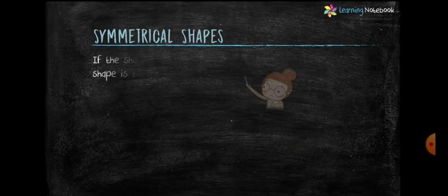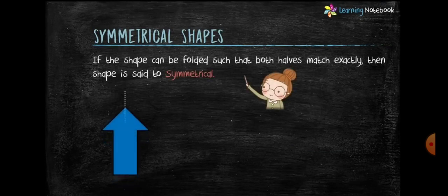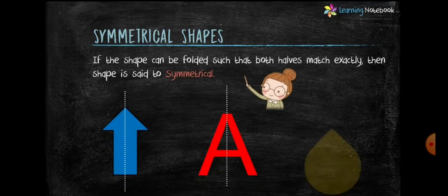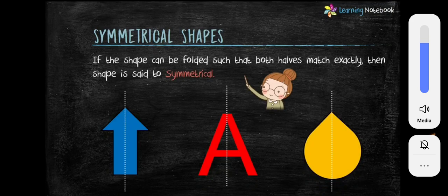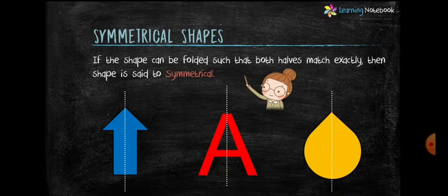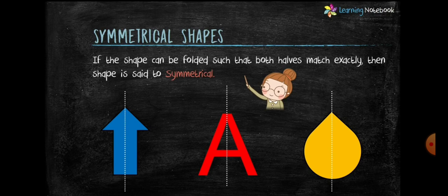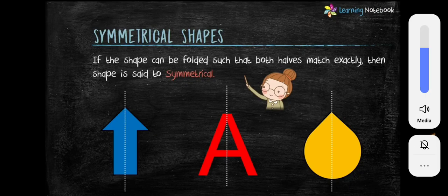First, let's understand what are symmetrical shapes. If the shape can be folded such that both halves match exactly, then the shape is said to be symmetrical. For example, these three are symmetrical shapes as when these are folded, both the halves match exactly.